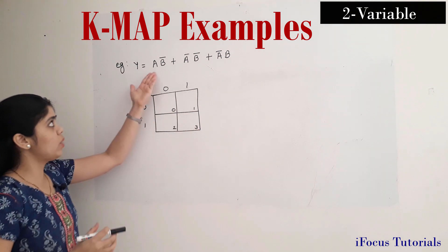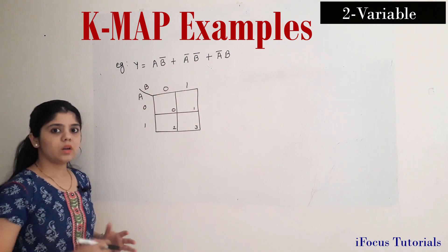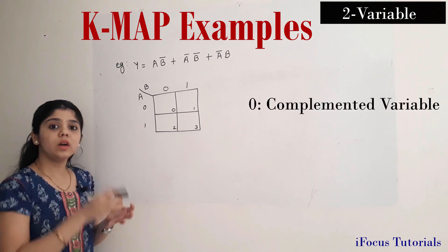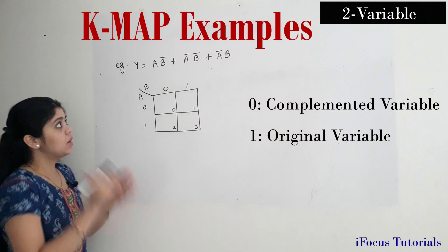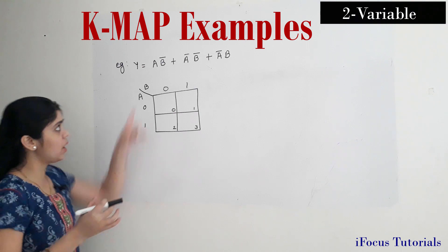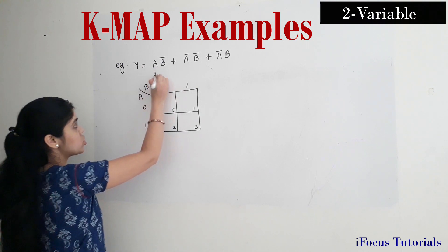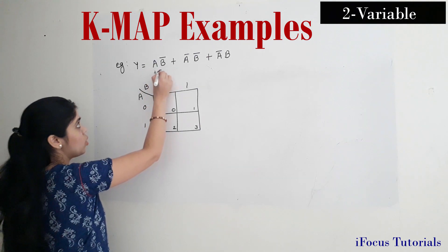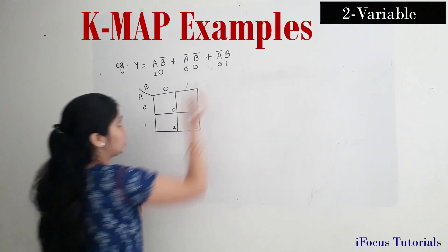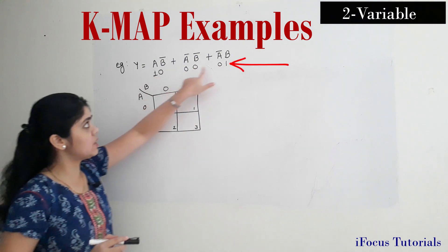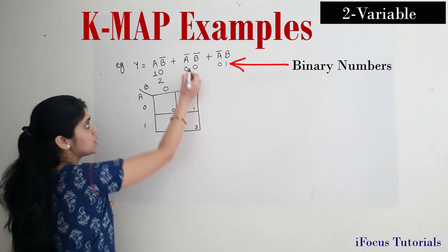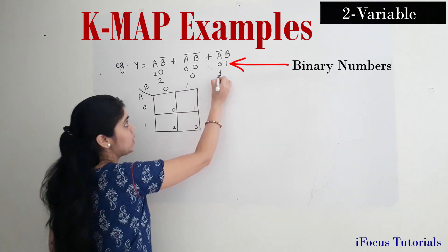Now, how we have to fill this expression into the KMAP. In an SOP expression, the complemented variable indicates a 0 and the original variable indicates a 1. If I want to represent this expression in terms of 0 and 1: A is an original term so it is 1, and B bar is a complemented variable so it is 0. Again, here we have 0, 0 and 0, 1.